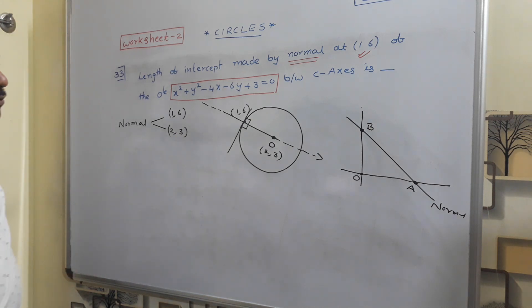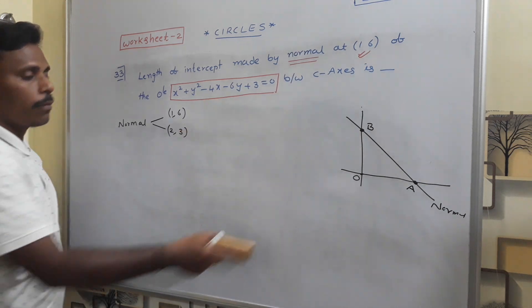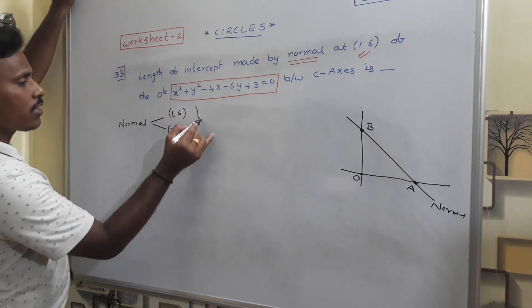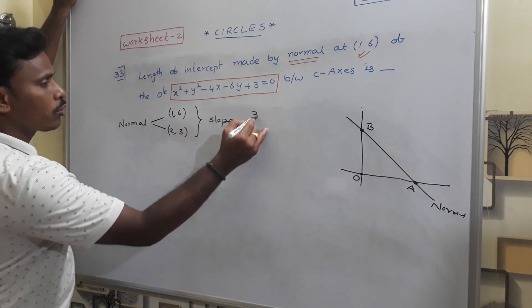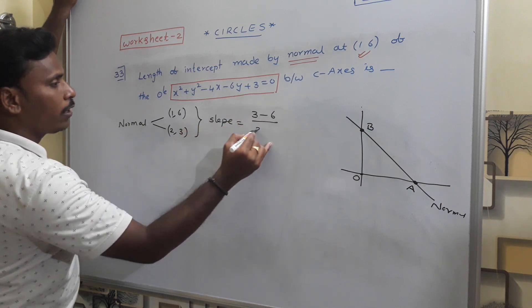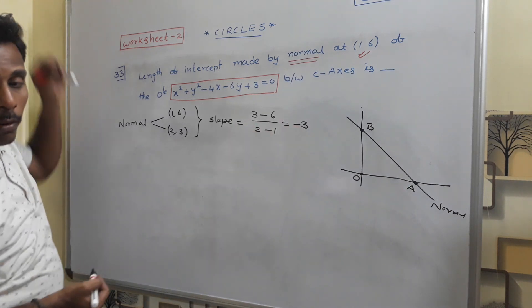Is it clear? All right. You plot 2 points on the normal equation. Find out 2 points: (1,6) and (2,3). Slope of the normal: slope equals (3-6)/(2-1). From there, I will get -3. This is the slope of the normal.